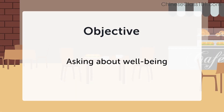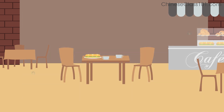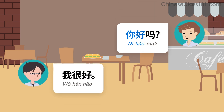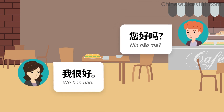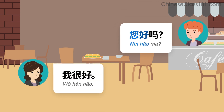你好吗？ In the next minute, you'll be challenged with asking someone about their well-being. First, let's look at some examples. 你好吗？ 我很好。 你好吗？ 我一般般。 你好吗？ 我很好。